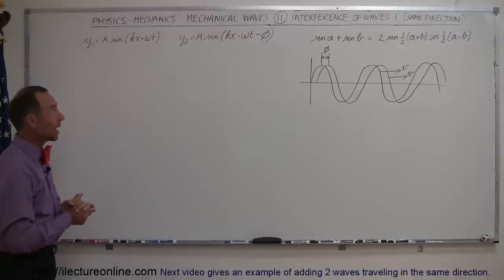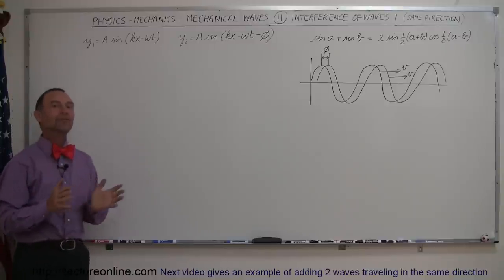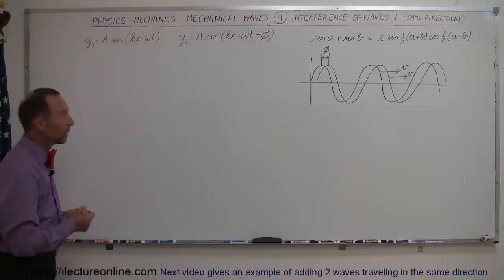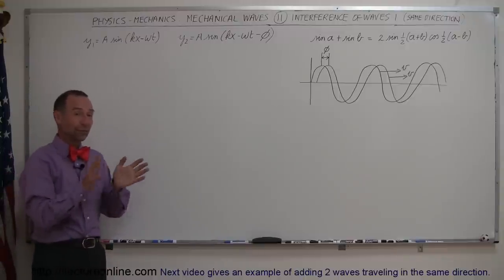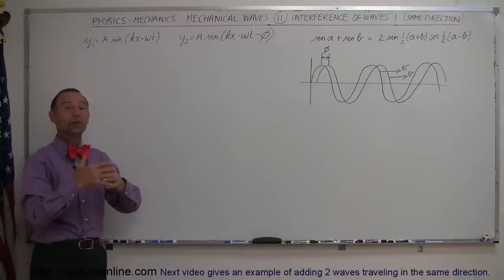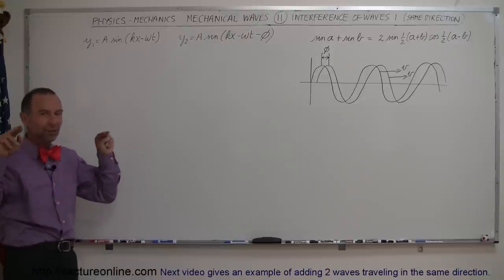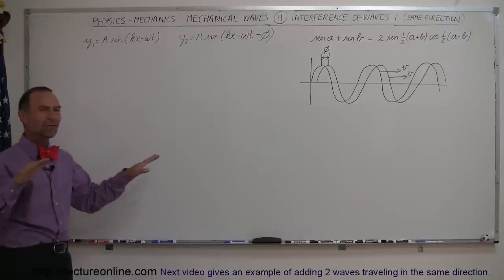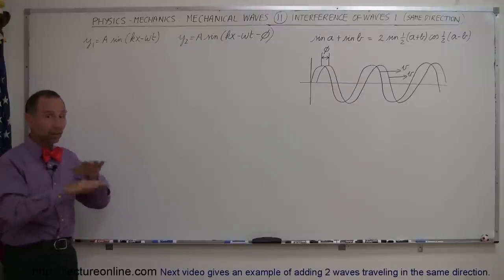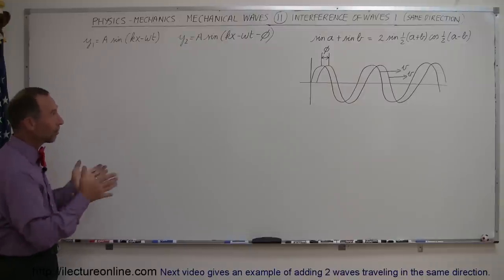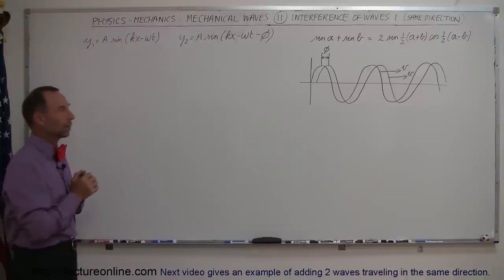In our next video on waves — mechanical waves — we're going to look at what we call wave interference. Now that sometimes has a wrong connotation. People think interference means waves destroy each other. Well, in some cases that is indeed the case. When waves interfere, two waves are superimposed on each other. Sometimes they cancel each other out and the wave completely disappears. Sometimes they add to one another and you end up with a bigger wave than you started with.